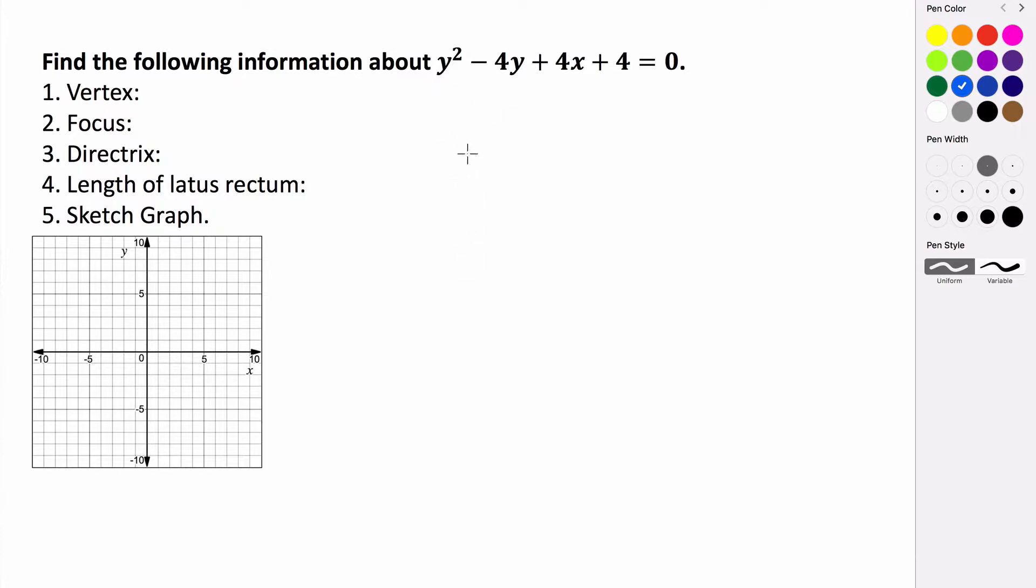So it should be y minus something quantity squared. So we're going to move the 4x and 4 to the right by subtracting them, and we will have this: y squared minus 4y equals negative 4x minus 4.